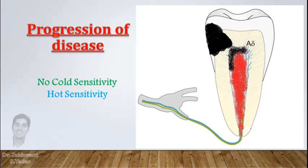So now the pulp fails to withstand the persistent inflammation and degeneration starts. In the same way, first A-delta fibers get necrosed, and at this point there will be no cold sensation. But because C-fibers are still inflamed, the patient complains of only heat sensation.